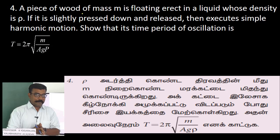A piece of wood of mass m is floating erect in a liquid whose density is rho. If it is slightly pressed down and released, then it executes simple harmonic motion. Show that its time period of oscillation is given by the formula.